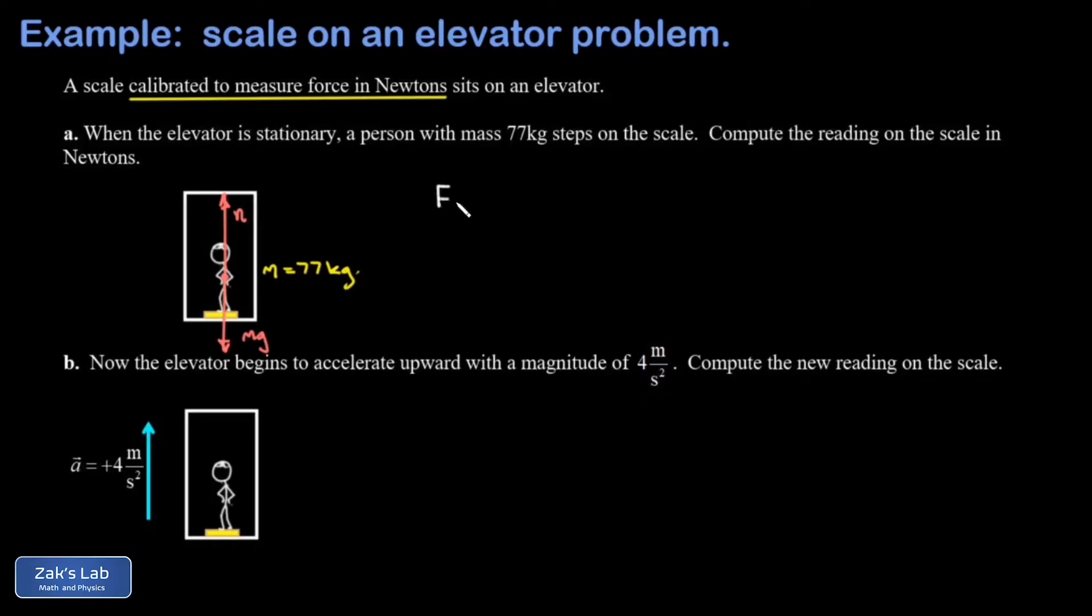would start with Newton's second law and say F_net equals ma, where I'm analyzing the forces on the person and the acceleration of the person. Well, the acceleration is zero, and then F_net, if I choose a coordinate system where upward is positive, F_net will be n minus mg, and that's equal to zero. In other words,